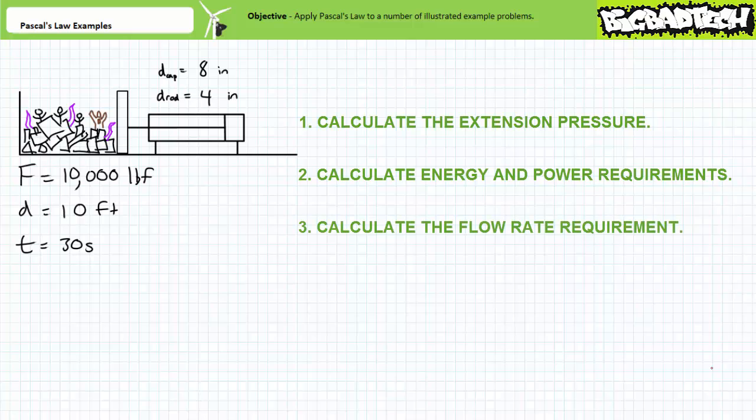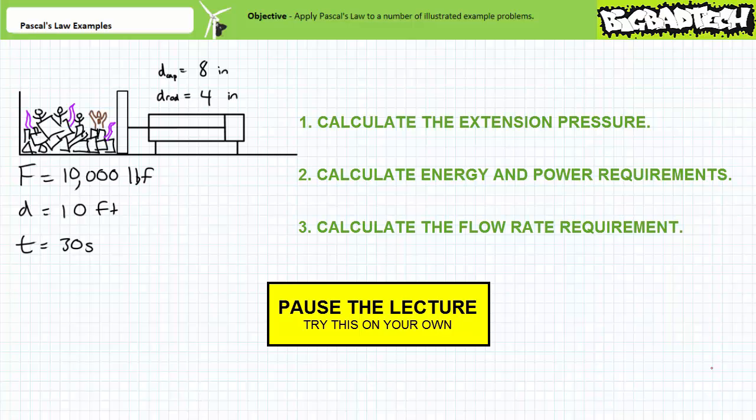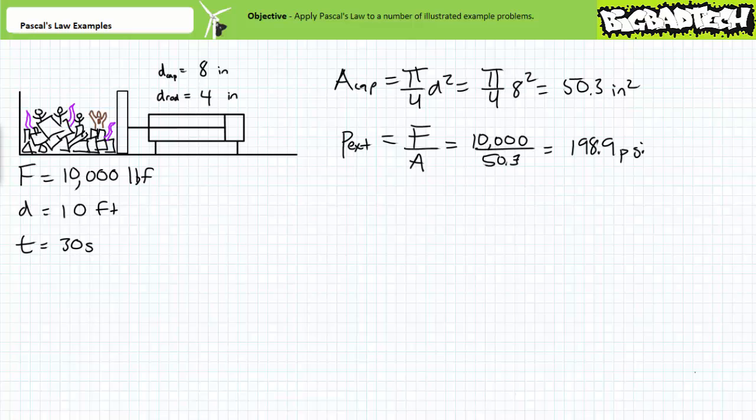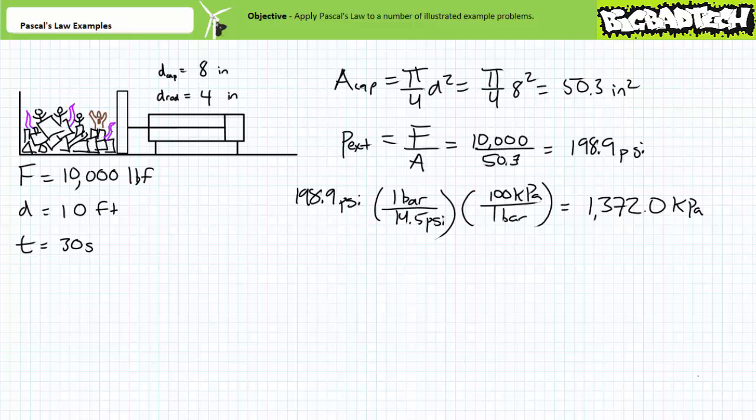If you're up for it, let's see if you can calculate the flow rate in units of gallons per minute to extend this 8 inch diameter cylinder 10 feet in 30 seconds. By all means, pause the lecture and take your best shot. The cap end functional area of a cylinder with a diameter of 8 inches is approximately 50.3 square inches. Pascal's law suggests that extending with 10,000 pounds of force using the full cap end area necessitates a working pressure of approximately 198.9 psi. This equates to roughly 13.7 bar or 1372 kilopascals or more appropriately approximately 1.4 megapascals.